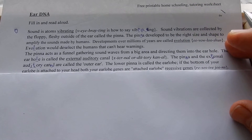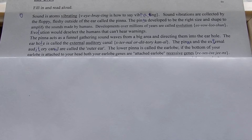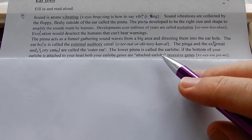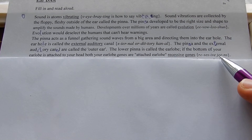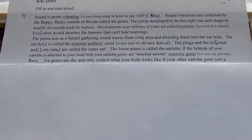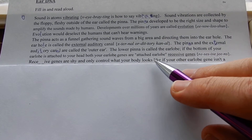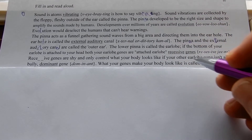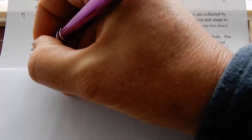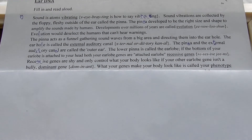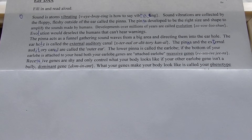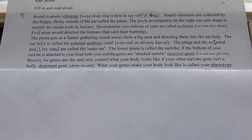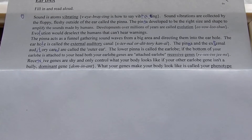The lower pinna is called the ear lobe. If the bottom of your ear lobe is attached to your head, both your ear lobe genes are recessive genes. Recessive genes are shy and only control what your body looks like if your other ear lobe gene isn't a bully dominant gene. If you get a recessive gene from your mum and from your dad, that's when you end up with attached ear lobes — which is cool, it's all part of the variety that makes humans lovely.